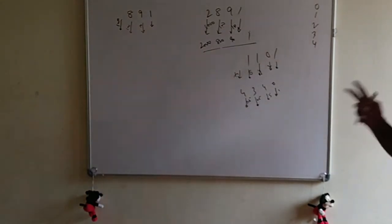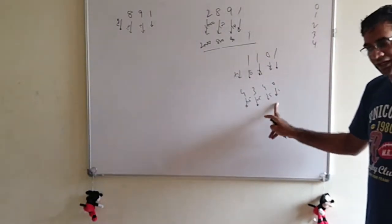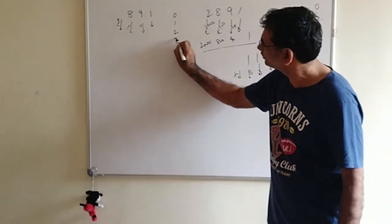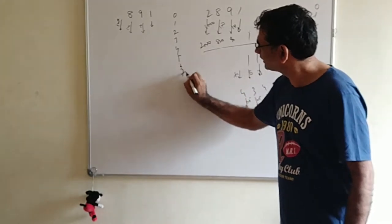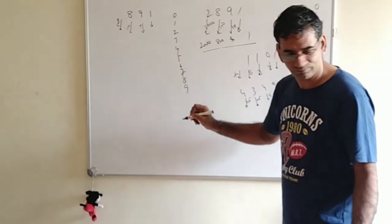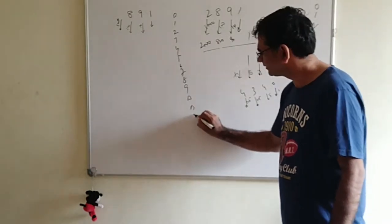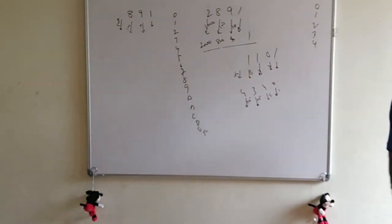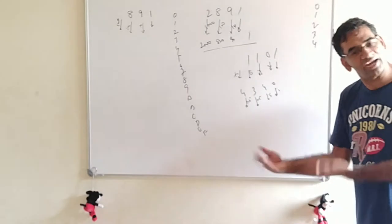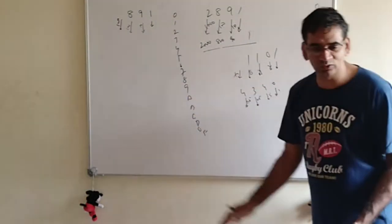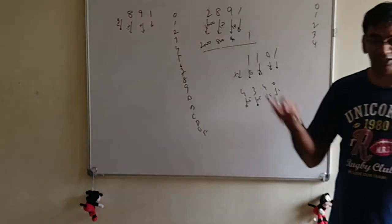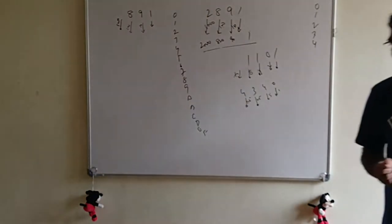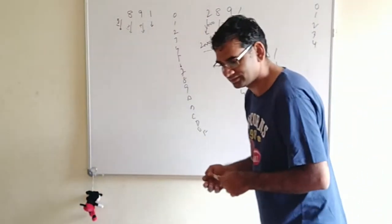In hexadecimal you have sixteen digits - one through nine, and then ten through fifteen are represented by A, B, C, D, E, F - because people only know letters and numbers, so they represent extra values with those characters rather than creating new ones. In binary you just multiply by two each time; in decimal you multiply by ten each time; in a penta system you multiply by five each time.